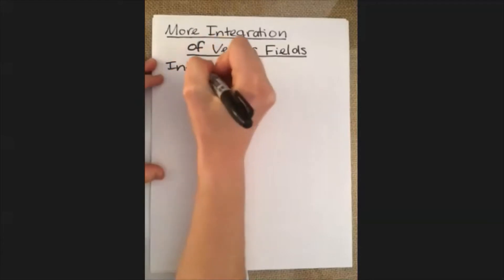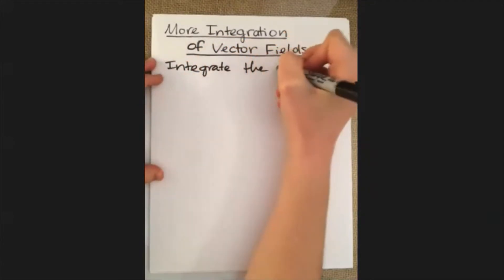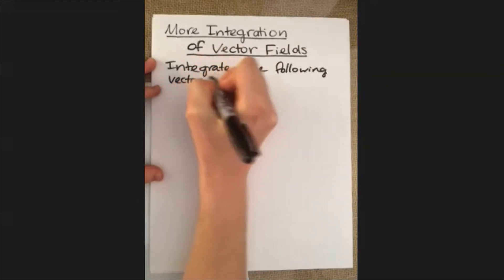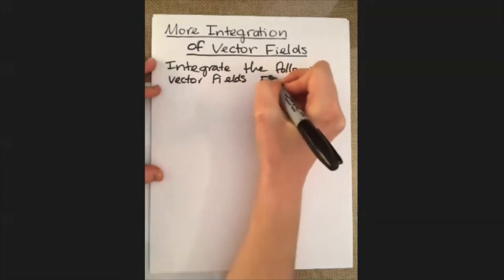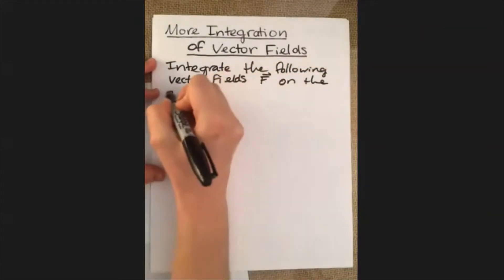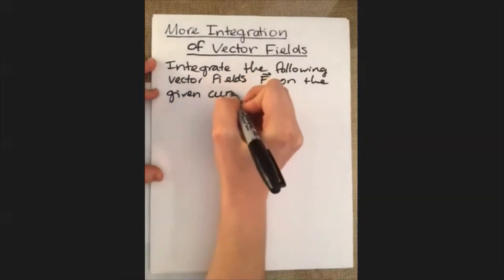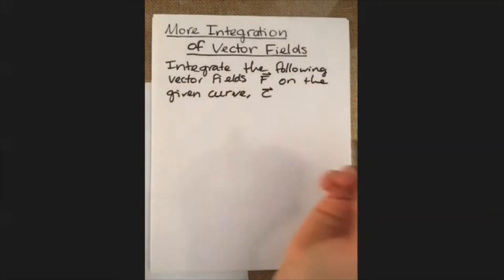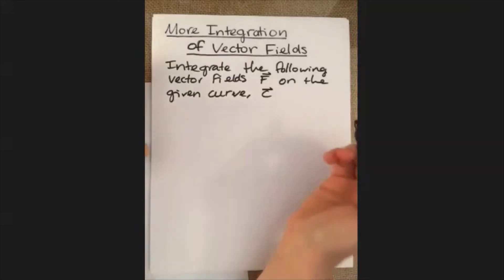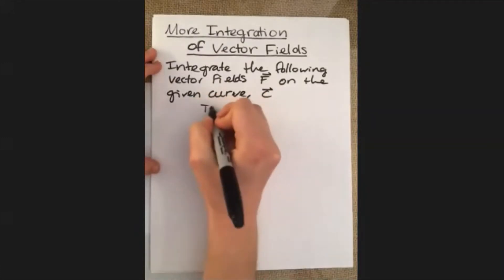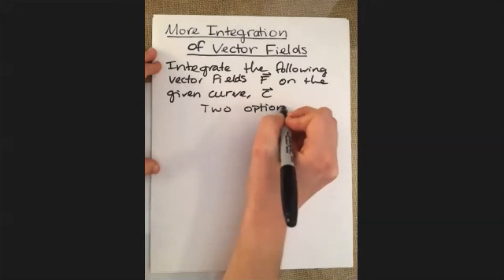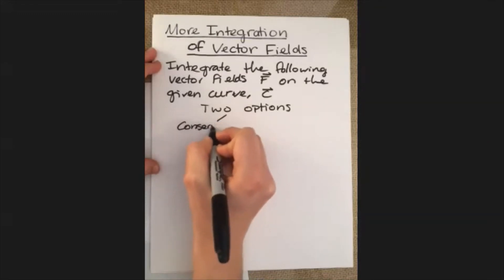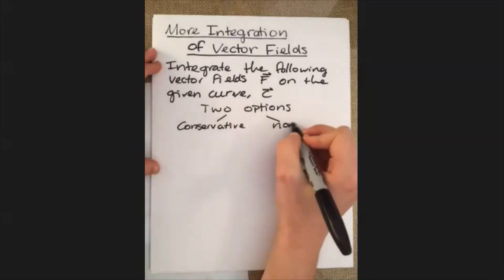We are going to integrate the following vector field F on the given curve C. We're not told whether it's conservative or not conservative, and depending on which one it is, there are two routes we want to take — two options. It may be a conservative vector field, or it may be a non-conservative vector field.